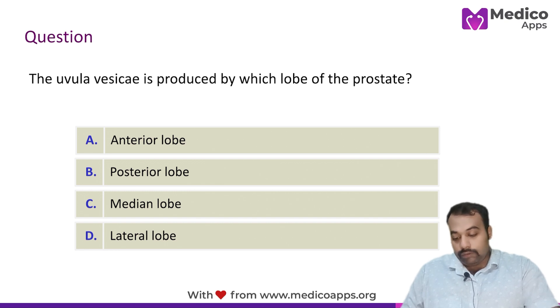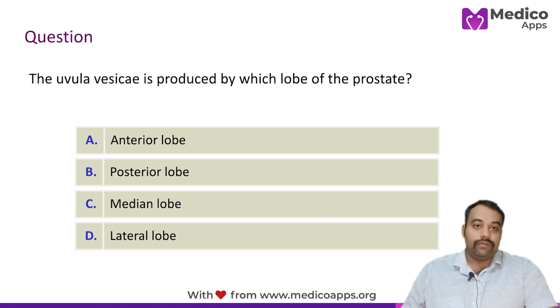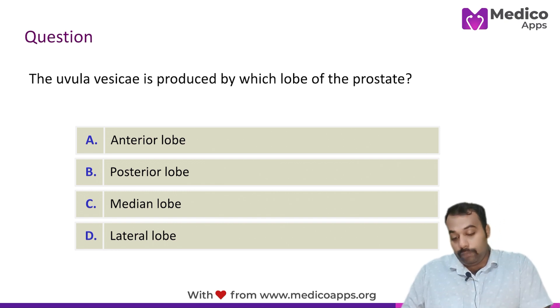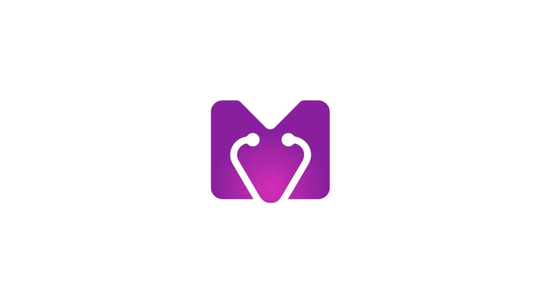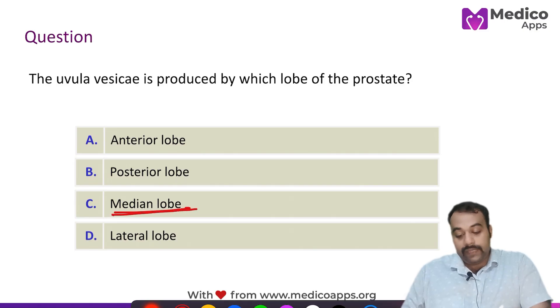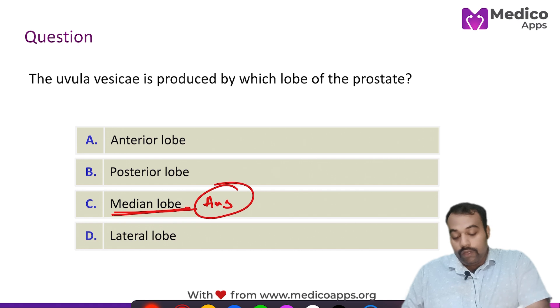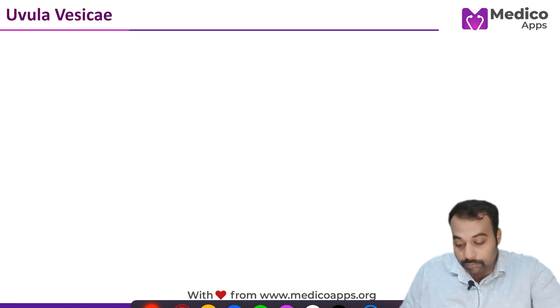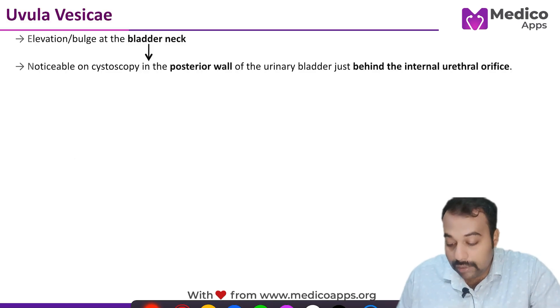The uvula vesicae is basically produced by the elevation of the medial lobe of the prostate. So your medial lobe is the answer here.